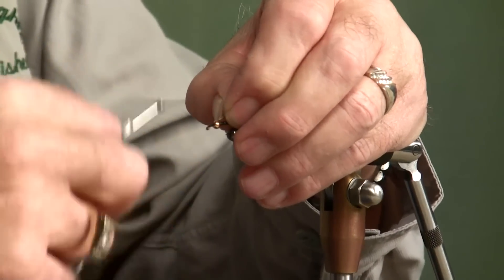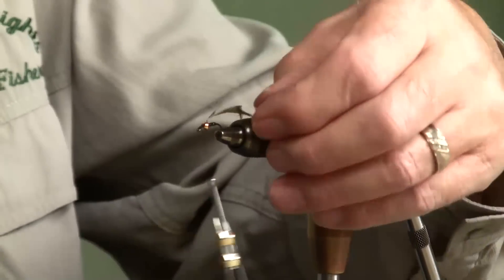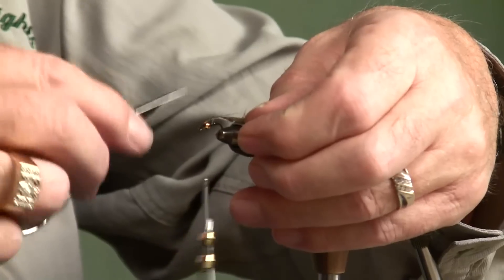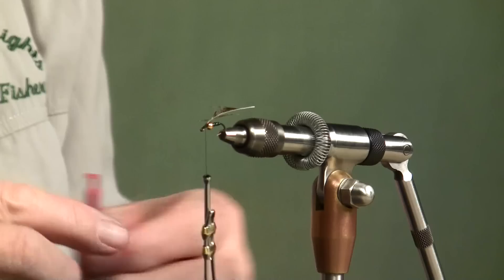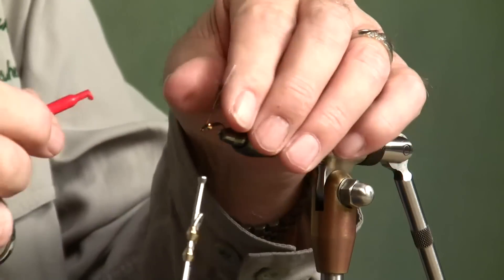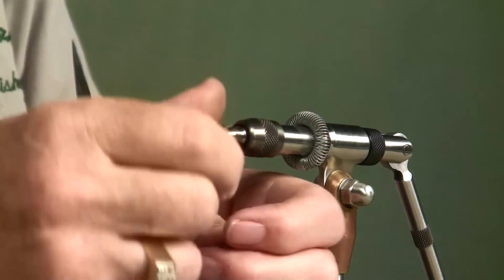Pull that through. By pulling those fibers off like that, it will make the feather, the fiber of the feather, lay back naturally, and it will not be as heavily hackled as if you'd have left both sides on. You can leave both sides on if you like. It's not a big deal.